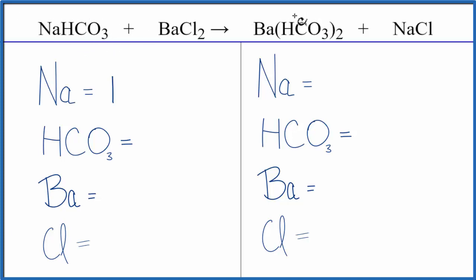We have it here and then we have it here again. So since it stays together, I'm going to count it as one thing. This is a technique you can use for these double displacement reactions. It'll make it a lot easier. So I have one HCO3, one Ba, and two Cls.